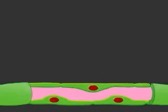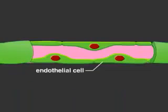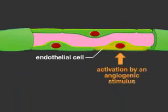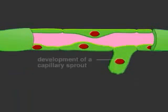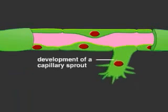The process begins when an endothelial cell of a small vessel is activated by an angiogenic stimulus, such as vascular endothelial growth factor, or VEGF. In response to the stimulus, the endothelial cell becomes motile and extends filopodia that guide the development of a capillary sprout.